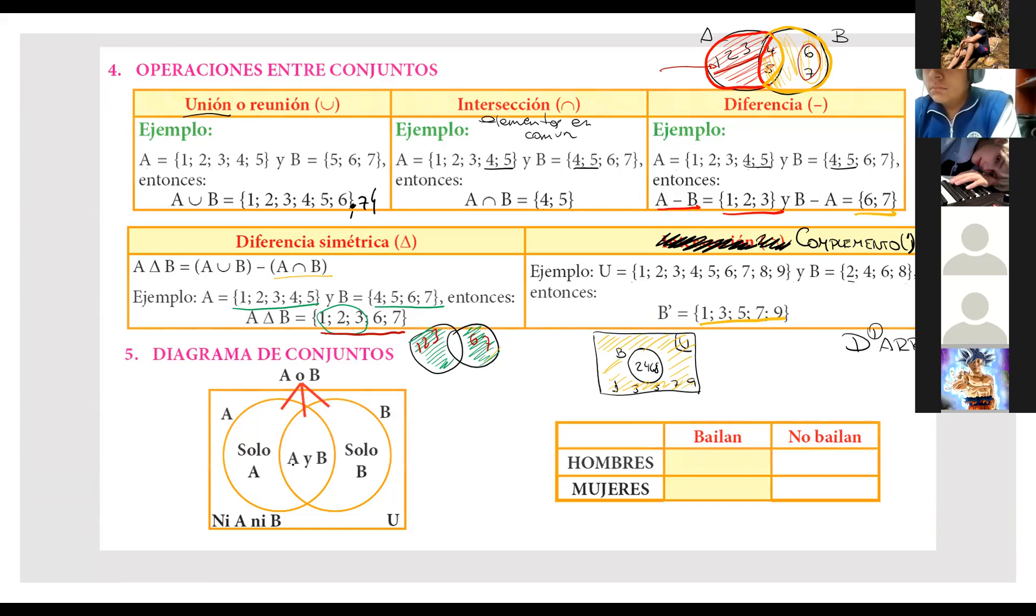Listo. Ahora, con respecto al diagrama de conjuntos. Bueno, si queremos A y B, entonces serán los valores que están en la intersección. Si queremos solo A, son los valores que se encuentran por acá, ¿no? Que ya los he señalado, ¿no? Que es tipo una media, tres cuartos de luna, ¿no? Si quisiéramos solo B, también, ¿no? Por el otro lado. Si no quisiéramos ni A ni B, bueno, tiene que estar fuera, ¿no? Y si quisiéramos A o B, entonces estos también pertenecen a la intersección. Bien. Planteemos un problema para rellenar este cuadrito de manera práctica y sencilla. ¿Ya? Escuchen con atención. ¿Ya?